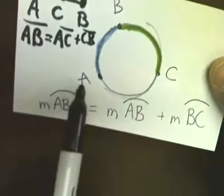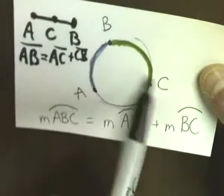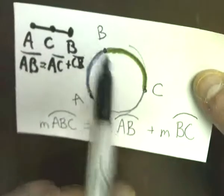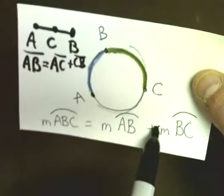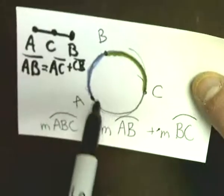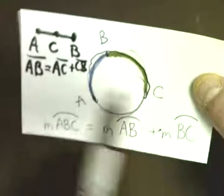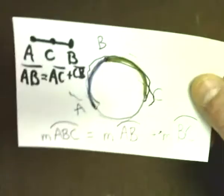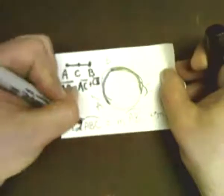because I can go from here to here. Or I could go here to here, and then C to B, and that takes me the same distance. Same thing here. The measurement of angle A, B, C equals the measurement of A, B plus the measurement of B, C. So, I'm going either all the way around, or I'm going part of the way and taking a little break. And then going on to the next one.